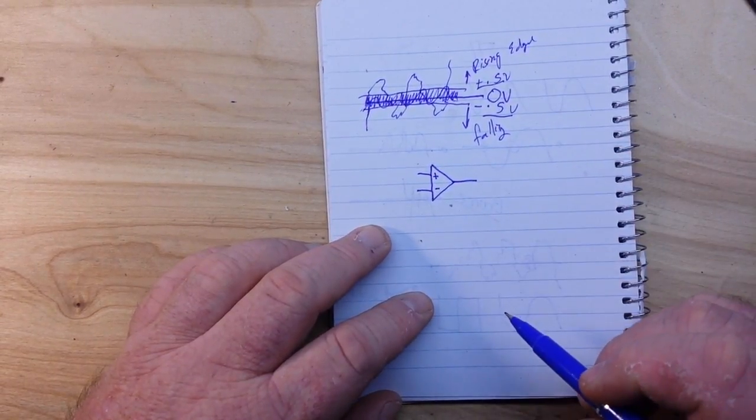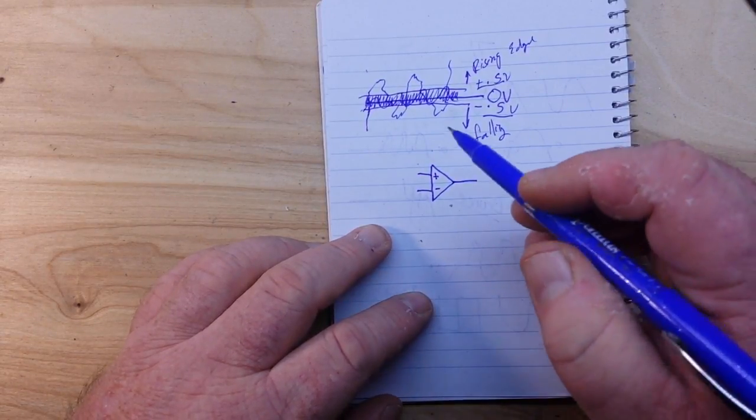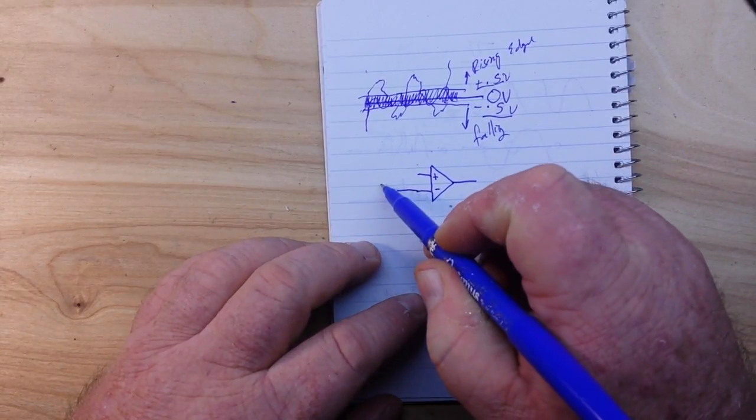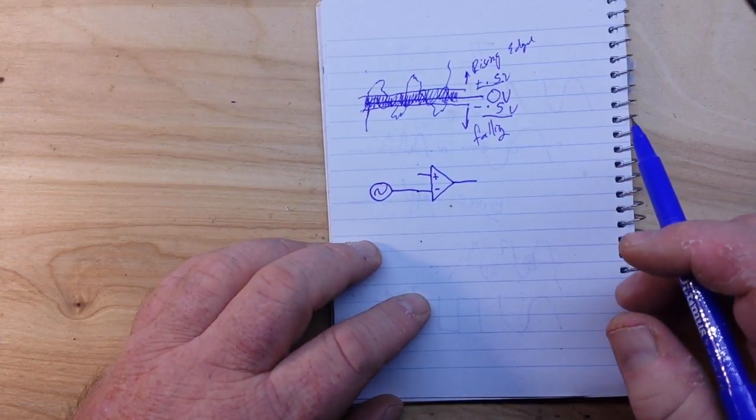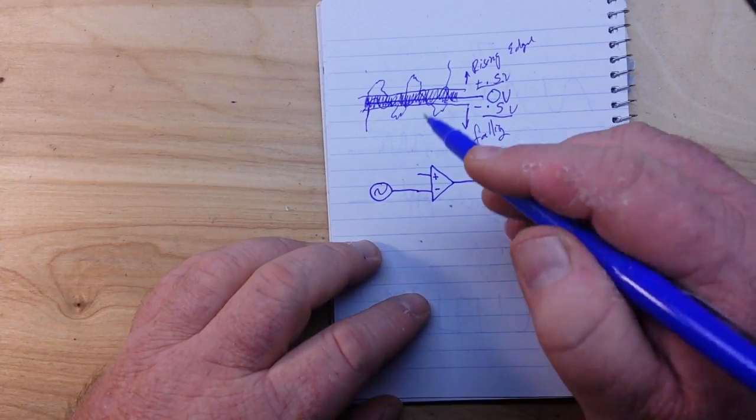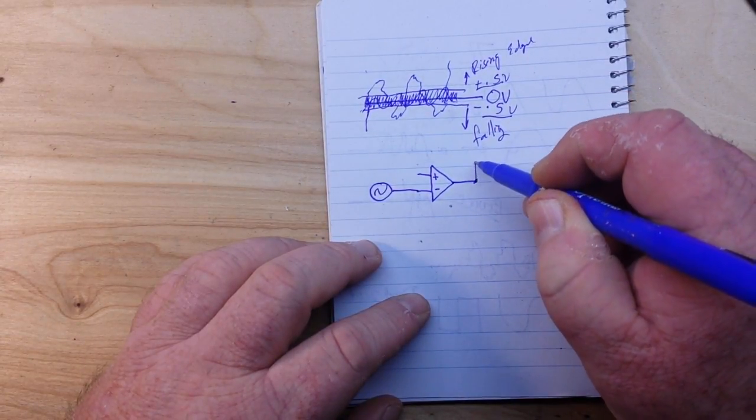You guys are familiar with that, right? It's an op-amp. So how are we going to do this? All right, so our signal is going to come in through the inverting input. From the output...